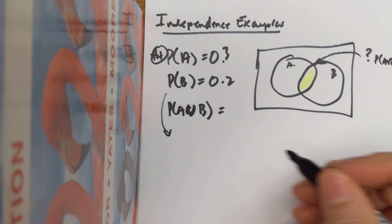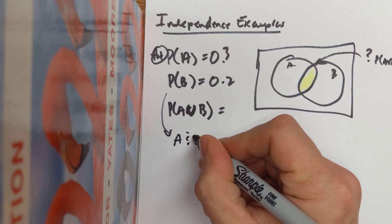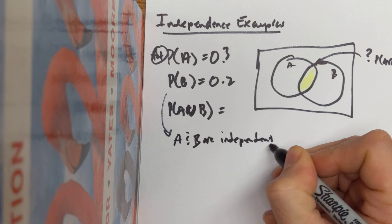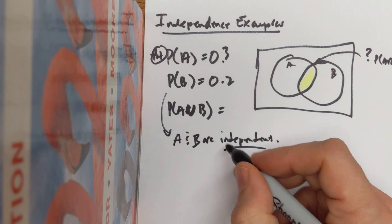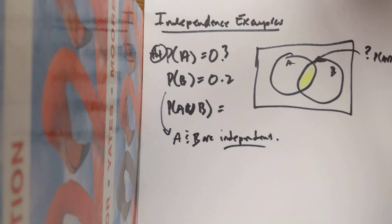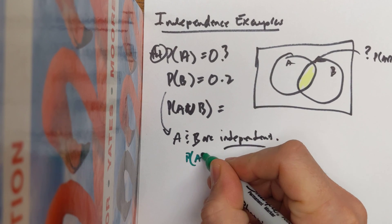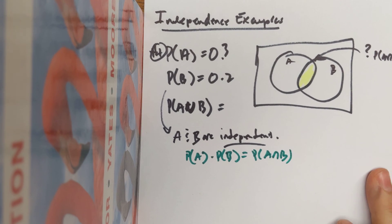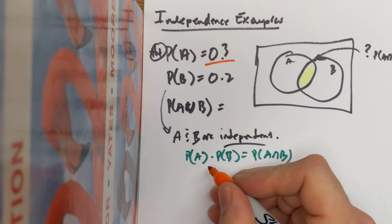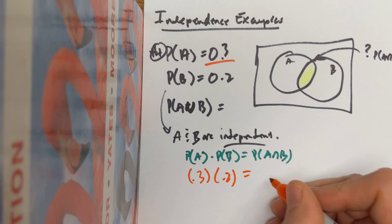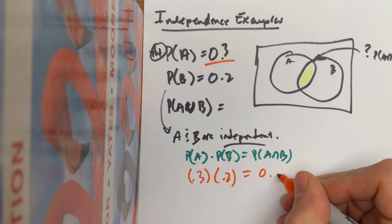Let's suppose that in this case we knew that A and B are independent. If that's the case, that's enough information, because that's enough to know what this intersection is. I know that if the two events are independent, then the probability of A times the probability of B will give me the probability of A intersect B. So let's just plug some numbers in: 0.3 times 0.2 means that their intersection should be 0.06.